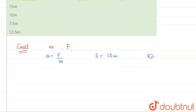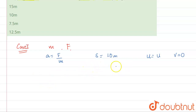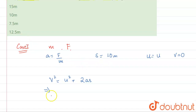We assume the initial velocity is u and the final velocity is zero. We use the third equation of motion: v² = u² + 2as. Substituting, we get zero equals u² plus 2 into a into s.